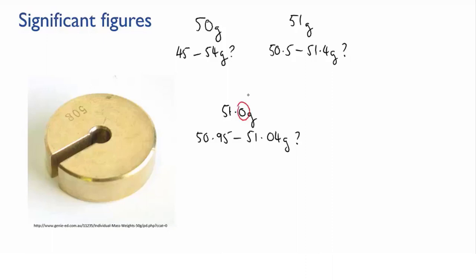That zero says we measured this thing accurately enough to be sure that however you measure its mass, it's going to round to 51.0 grams. It might be 51.0398561 grams. It might be 50.999999 grams. But whatever it is, it's going to round to 51.0.